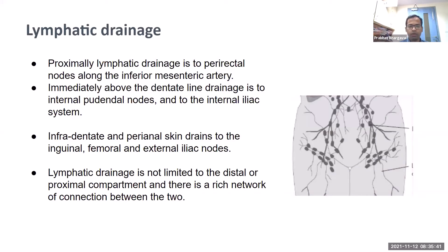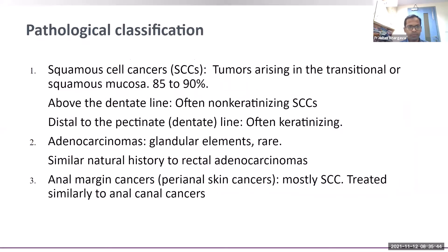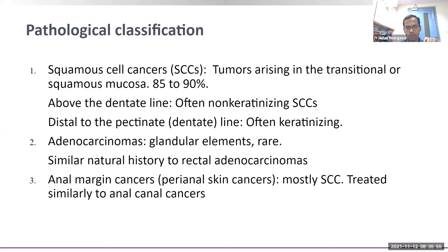Immediately above the dentate line, lymphatic drainage is to the internal pudendal nodes and internal iliac nodes, while those in the infradentate and perianal skin region drain to the inguinal, femoral, and external iliac nodes. The lymphatic drainage is not limited to distal or proximal — there is a rich network of connections. Pathologically, there are now three types: squamous cell carcinoma, adenocarcinoma, and anal margin cancers.